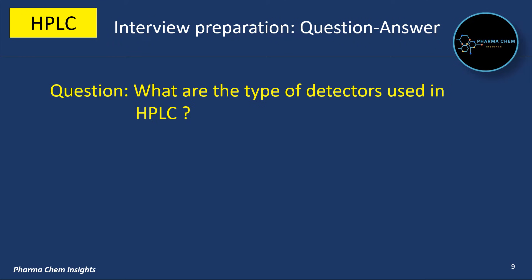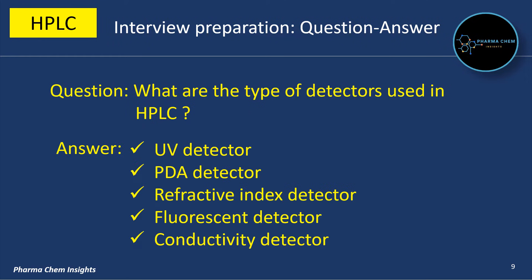What are the types of detectors used in HPLC? These are the types of detectors used in HPLC: UV detector, PDA detector (that is photodiode array detector), refractive index detector, fluorescent detector, and conductivity detector.